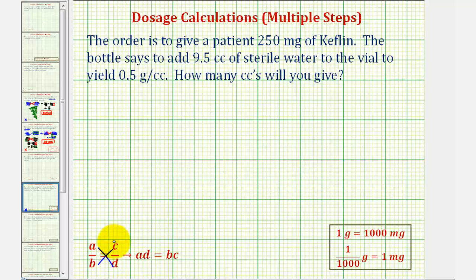Looking at the given information, after we add the sterile water, the vial is going to yield 0.5 grams per cc. This will be our first rate for the proportion. So, 0.5 grams per one cc.